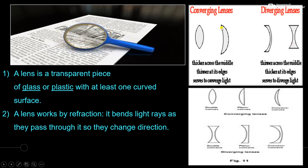What is the phenomenon on which these lenses work? A lens works by the phenomenon of refraction. Refraction means it bends the light rays as they pass through it — they change direction. So first is bending of light rays, and second is changing its direction when the light rays are coming from the source.